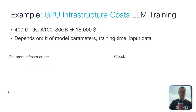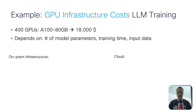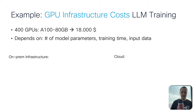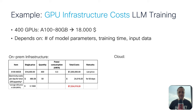Now let's check the infrastructure cost. Because if you think about this, the costs are not that low. In this example we have 400 GPUs — let's say 80-gigabyte GPUs — and the list price for one GPU is $18,000 US dollars. LLM training depends on the number of model parameters, the training time, and the input data. So for now we say we will use 400 GPUs. On-prem, going with list price and hoping for some discount from NVIDIA, the total cost is $7.2 million for the GPUs alone.